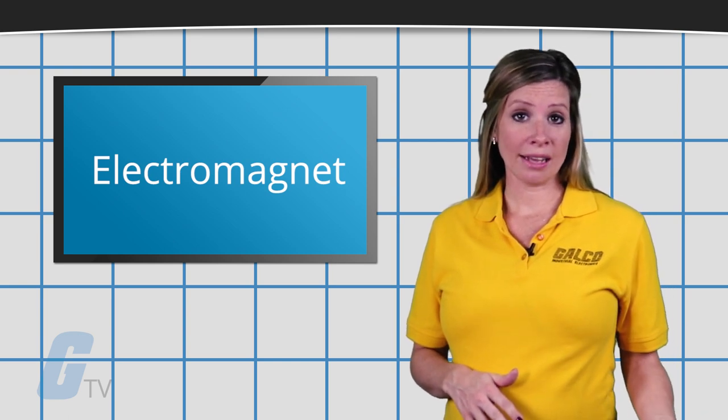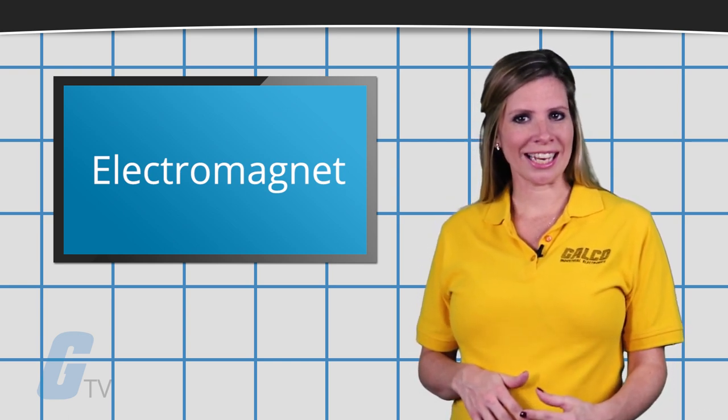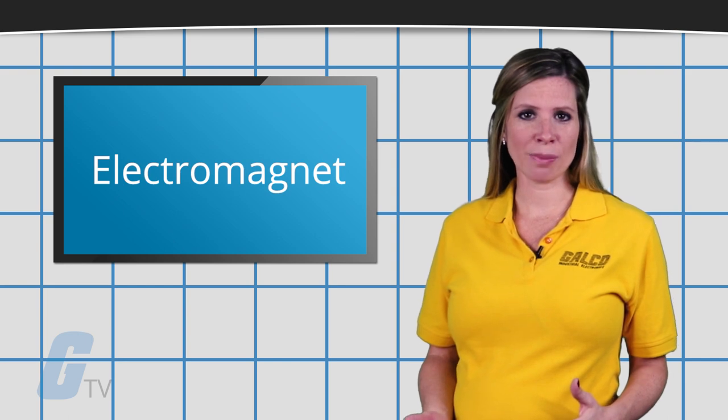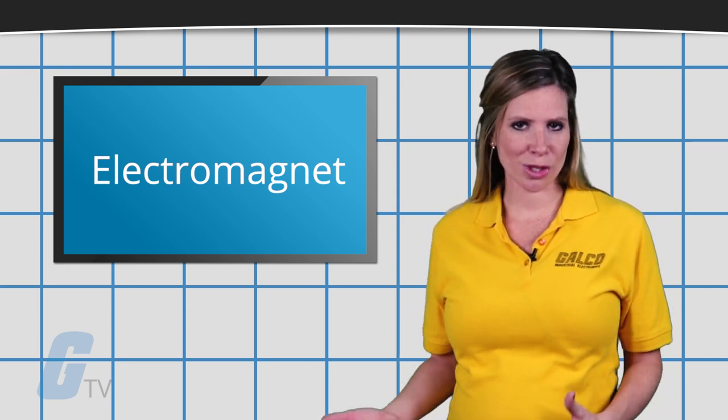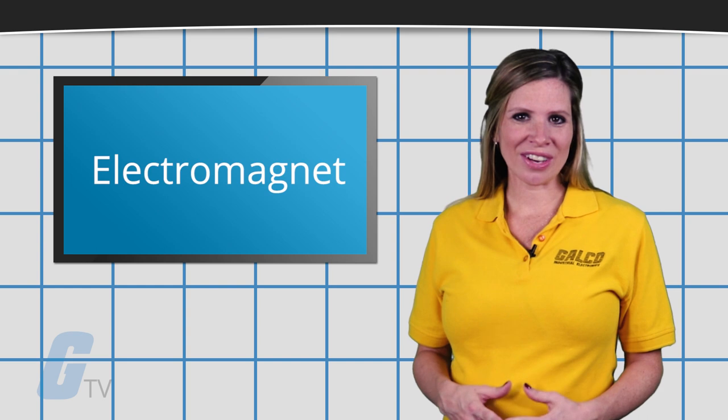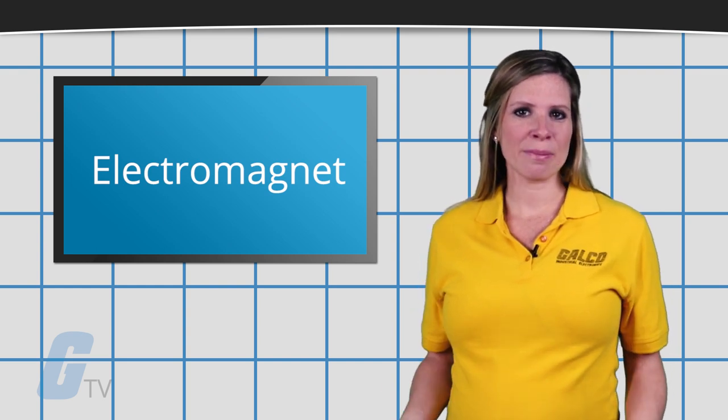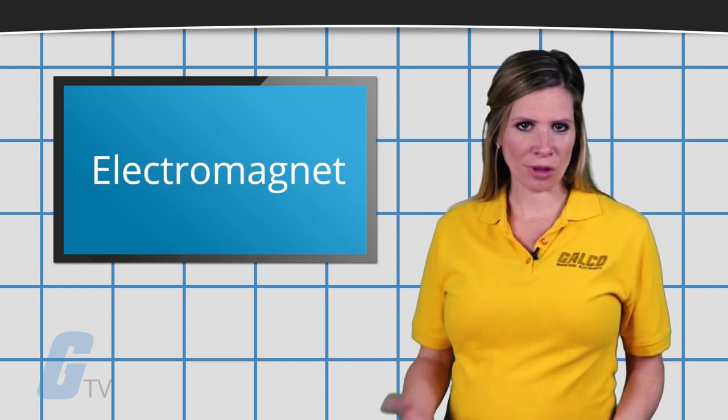Unlike a permanent magnet, the strength of an electromagnet can easily be changed by changing the amount of electric current that flows through it. The poles of an electromagnet can even be reversed by reversing the flow of electricity.